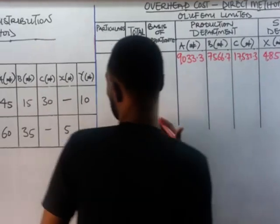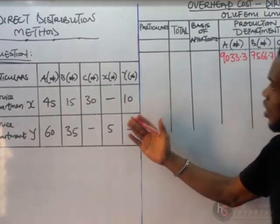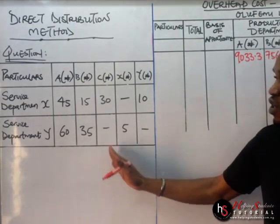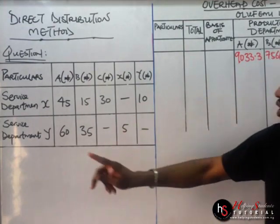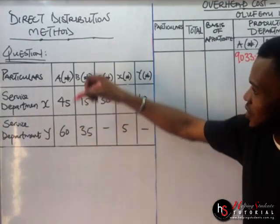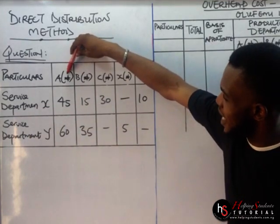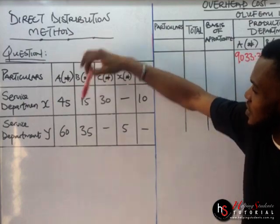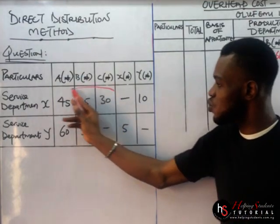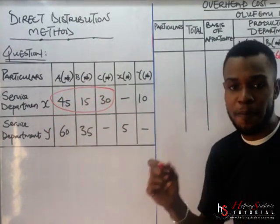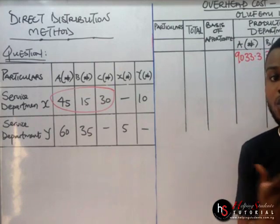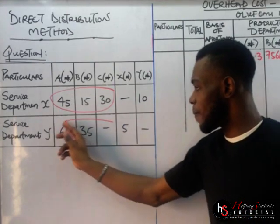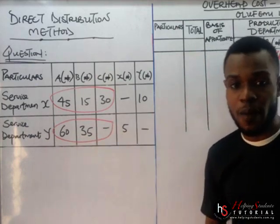To answer this question, let us come back to this aspect. From the question or from the table, the additional information there, we'll have our service department. For production department A, we'll have 45; B, 15; and C, 30. Now, these values represent the basis of apportionment, just like what we did in the repeated distribution method. These are the basis of apportionment — 45 ratio 15 ratio 30.